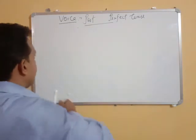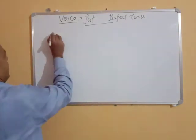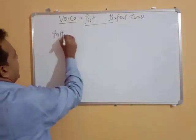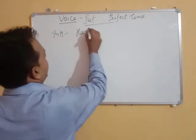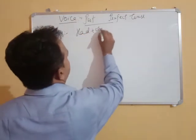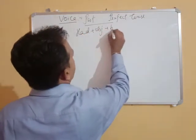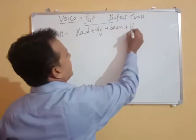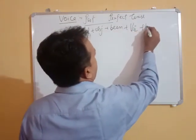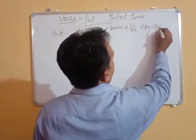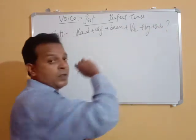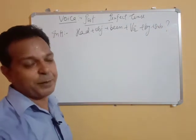The interrogative rule is not difficult at all. The structure is: Had + object + been + V3 + by + subject, and finally a question mark.